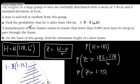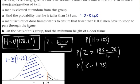Okay, a manufacturer of door frames wants to ensure that fewer than 0.005 men have to stoop to pass through the frame. On the basis of this group, find the minimum height of the door frame.